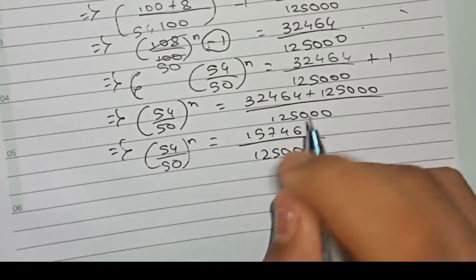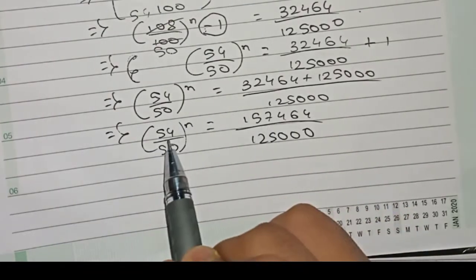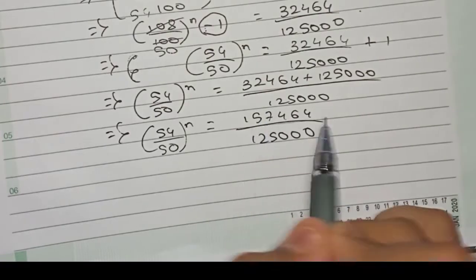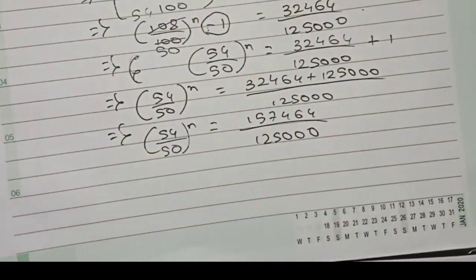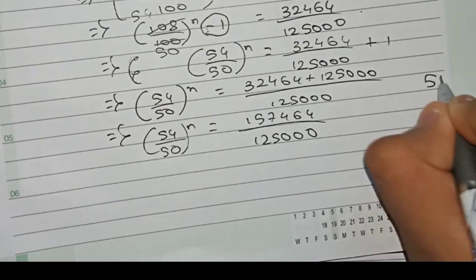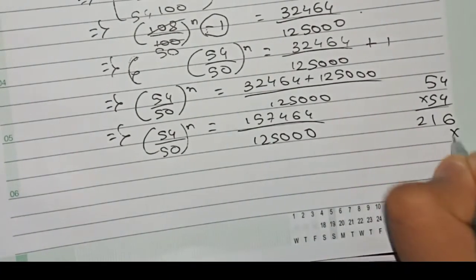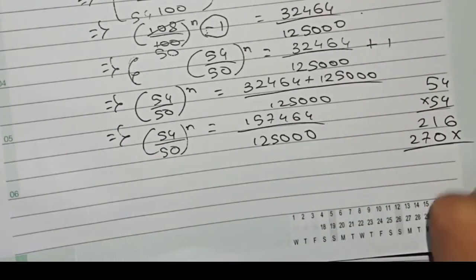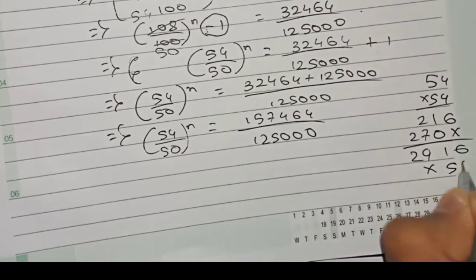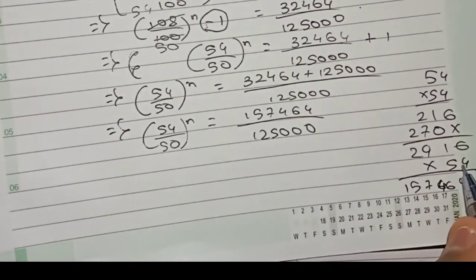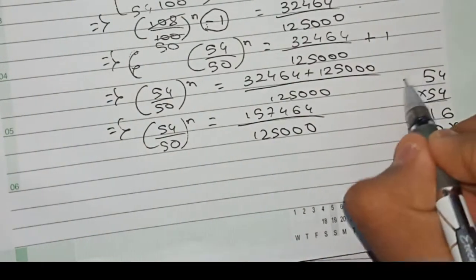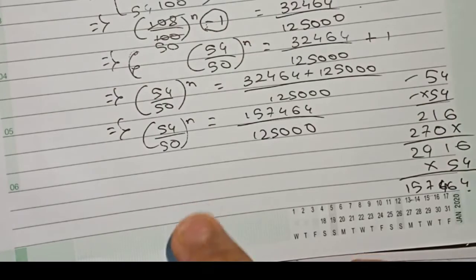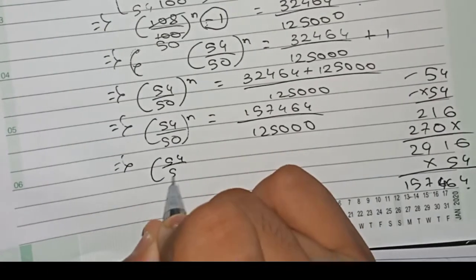Now we need to find n such that 54^n matches the numerator. Multiplying 54 × 54 × 54, we get 157464 — wait, after repeated multiplication 54 is taken three times. So 54 to the power 3 equals this number. Therefore (54/50)^n = (54/50)^3.